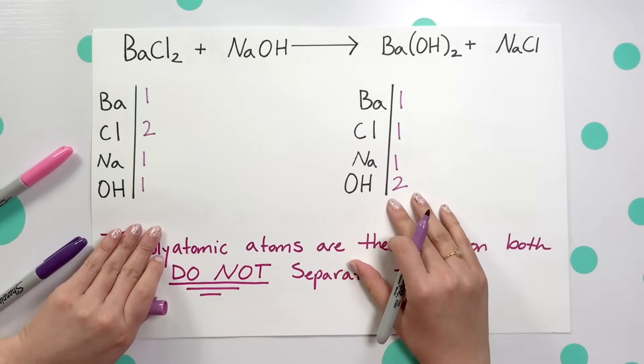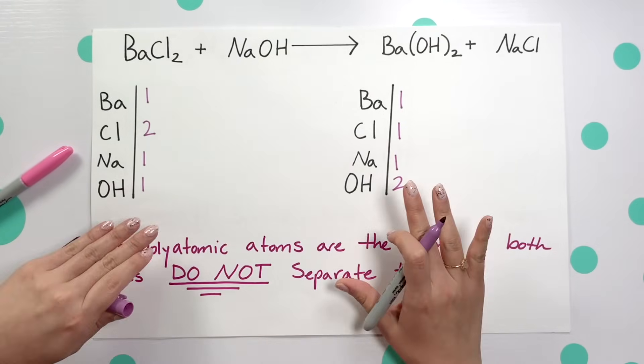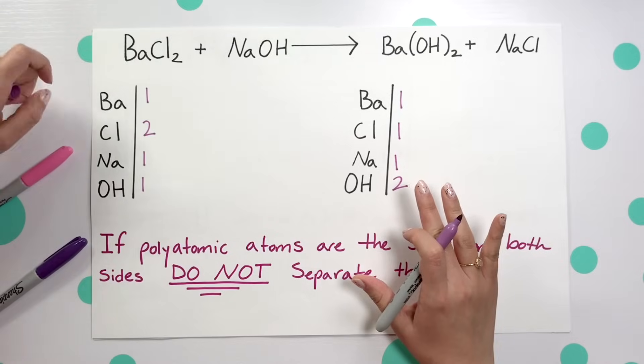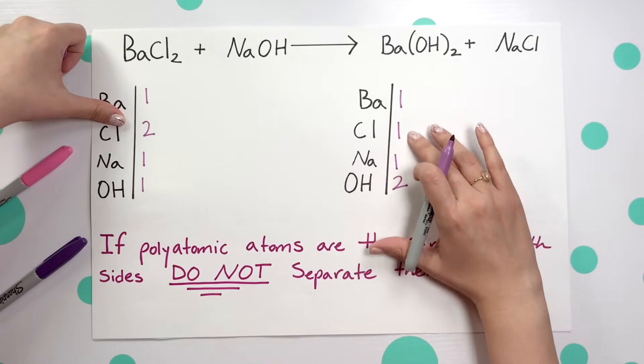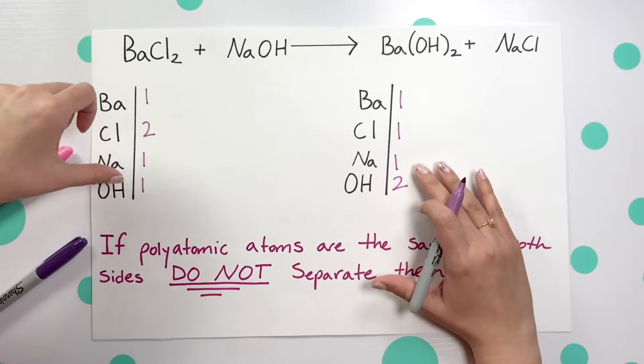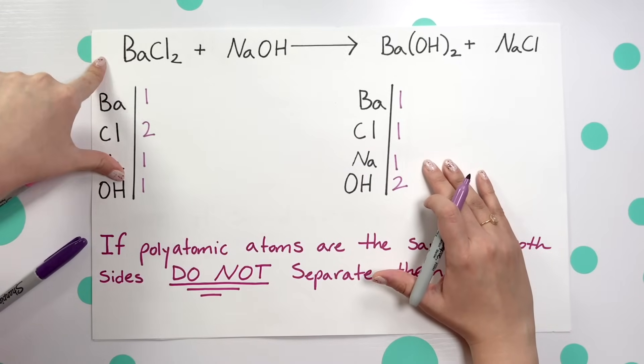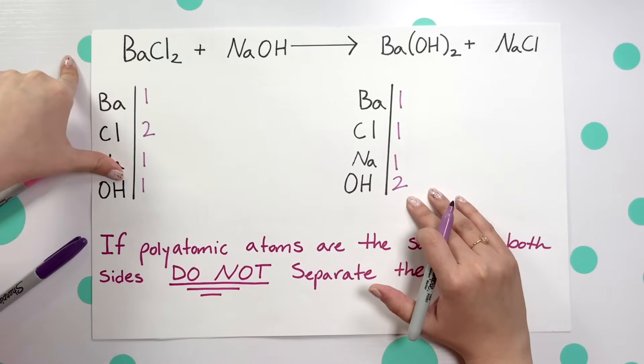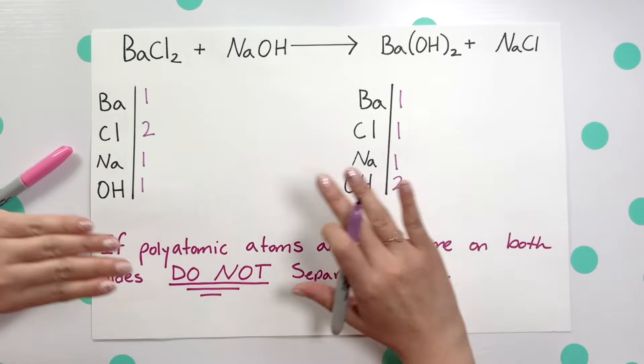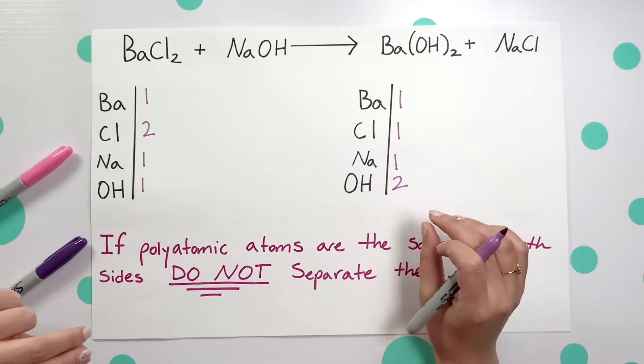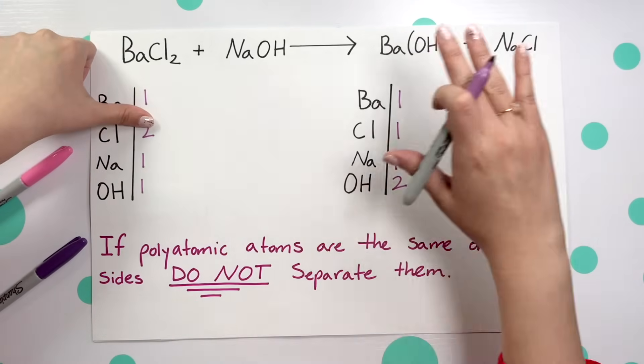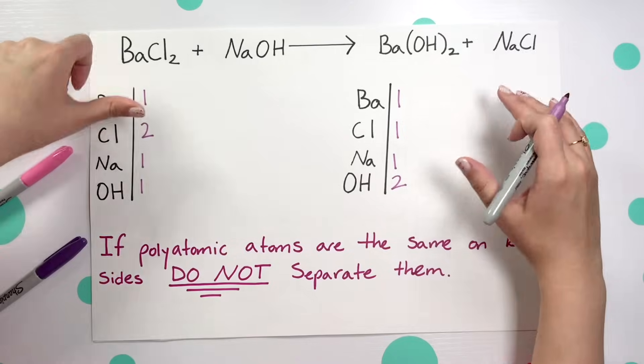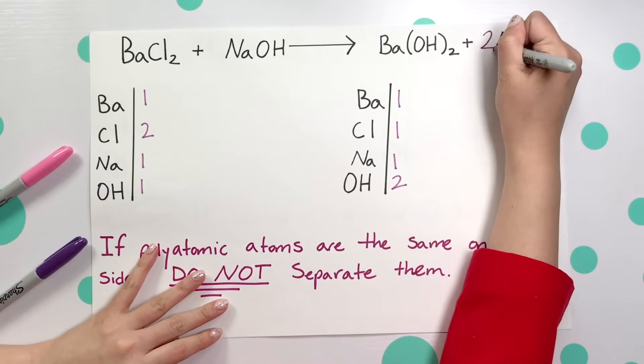Now the next step is to figure out what do we want to balance. We have to balance out our chlorine because there's two on this side and only one on the other. Always begin with everything other than hydrogen and oxygen, so I'm actually going to start with the chlorine first. Since there's a two here I need two more on the product side, so I'm going to place a two right in front of that compound.